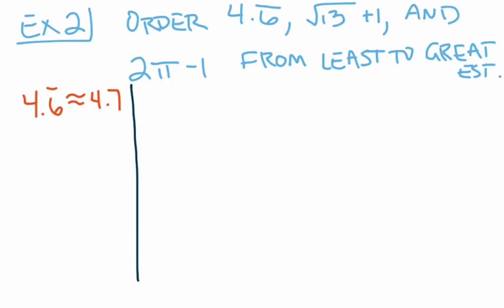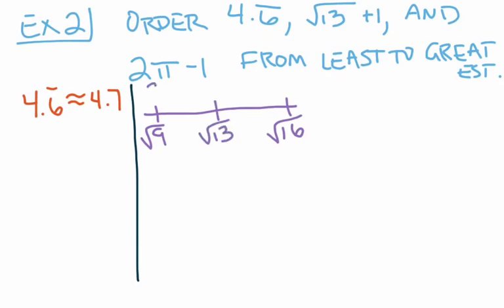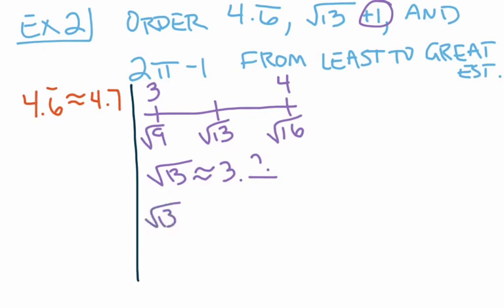The next number I'm going to estimate is the square root of 13 plus 1. For the square root of 13, I'll place it on a number line — it falls in between the square root of 9 and the square root of 16, actually really close to the middle. The square root of 9 is 3 and the square root of 16 is 4, so the square root of 13 is approximately 3 point something. Adding the plus 1 gives me 4 point something. When I look back and see 4.7, it becomes clear I need to figure out exactly what that something is.